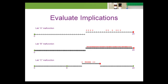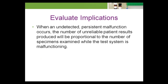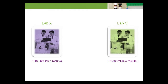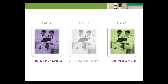After the malfunction is detected by a failing QC event, it is corrected and subsequent results are reliable. This example is somewhat optimistic in assuming that the first QC event will detect the malfunction; depending on the magnitude of the error and the QC rules used, it may take several QC evaluations to detect the malfunction. When an undetected persistent malfunction occurs, the number of unreliable patient results produced will be proportional to the number of specimens examined while the test system is malfunctioning. The number of unreliable results produced by Lab A is approximately the same as Lab C, but Lab B produced six times as many unreliable results as Labs A or C.